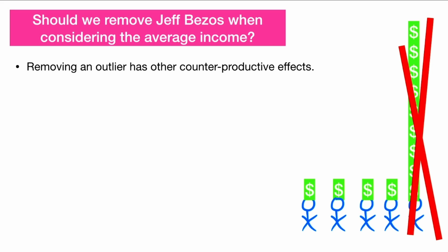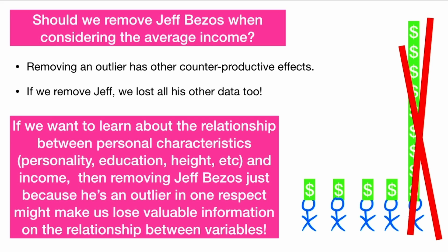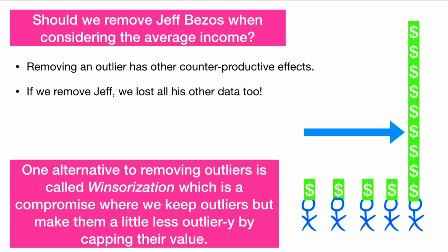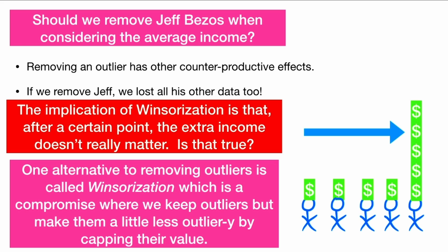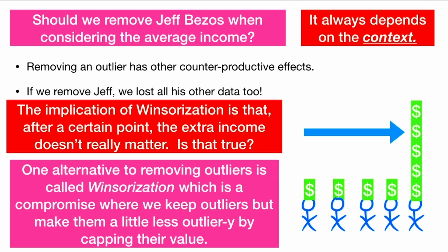Removing an outlier also has other counterproductive effects. If we remove Jeff, we lose all of his other data too, not just income. So if we want to learn about the relationship between personal characteristics like personality, education, height, and income, then removing Jeff Bezos just because he's an outlier in one respect might make us lose valuable information on the relationship between variables. One alternative is called Windsorization — a compromise where we keep outliers but make them a little less outlier-y by capping their value. The implication is that after a certain point, the extra income doesn't really matter. For taxation this might not be reasonable, but for other analyses it might be a good method.